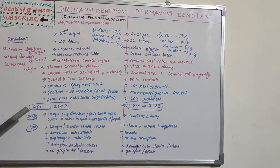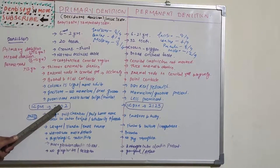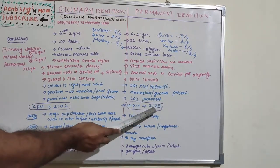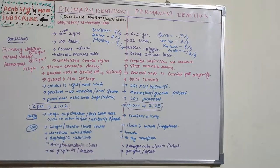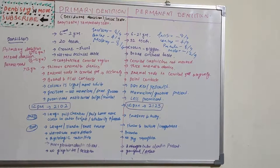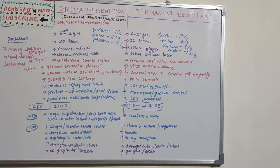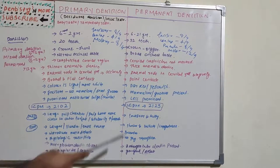The dental formula is I-C-P-M: incisors, canines, premolars, and molars. For primary dentition per quadrant: 2 incisors, 1 canine, no premolars, 2 molars — giving the formula 2-1-0-2. For permanent dentition: 2 incisors, 1 canine, 2 premolars, and 3 molars — formula 2-1-2-3. Regarding the pulp, deciduous dentition has a large pulp chamber and the pulp horns are closer to the outer surface. During treatment procedures, accidental pulpal exposure is more likely because of the bigger pulp chamber being very close to the enamel surface. Primary dentition also has more cellularity and more vascularity.